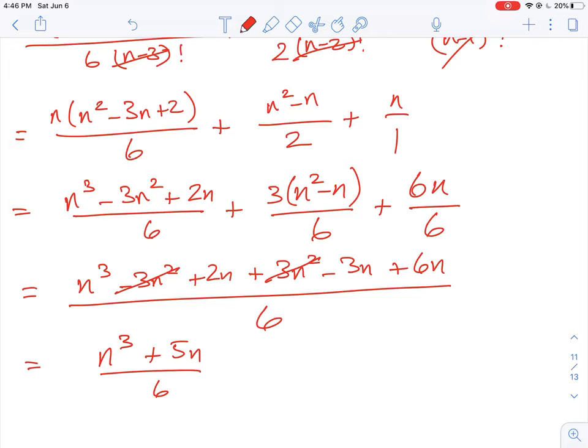So that is how it reduces to that same question. You could factor out the n and just have n squared plus 5 all over 6. Either example should be acceptable. Okay, so that's how that question works through.